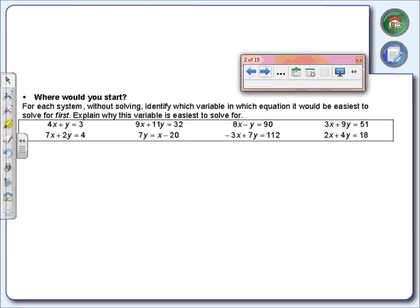Now on this next part, they gave us four different systems. We're not going to necessarily solve these right now. All they want us to do is look at those systems and identify which variable would be the easiest to solve for. So if we look at the first system, which variable would be the easiest to get by itself? Y. On which one? The first equation. So circle that y, probably the easiest to get by itself.